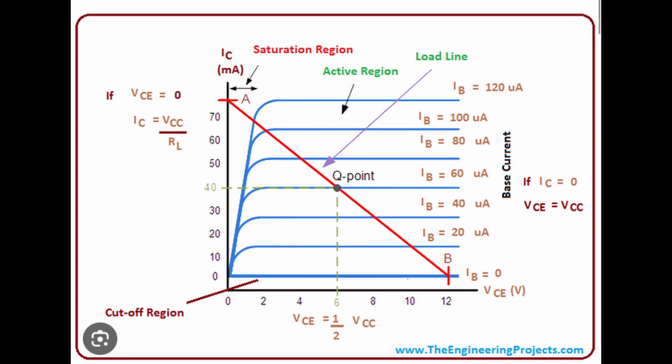You could design an amplifier from it, find the load line, look for the Q-point. With calculations you can actually build a transistor amplifier. Or what you can do is compare two transistors to see if the characteristics are the same, perhaps you want to match them.